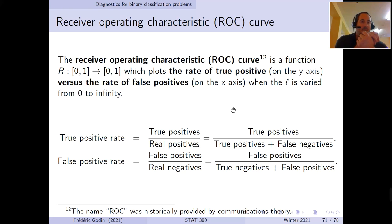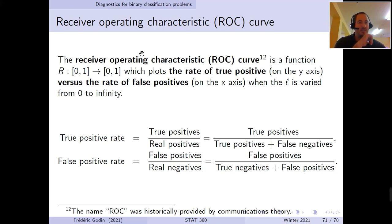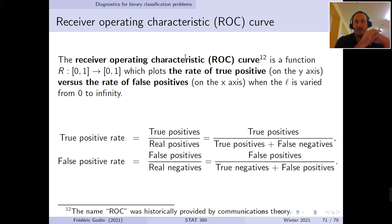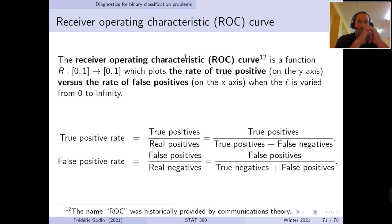Confusion matrices are fairly intuitive, so we won't spend much more time on them. Now we discuss the receiver operating characteristic curves — ROC curves. The name comes historically from communications theory, where it makes sense, but outside that context the name is a bit unusual. We'll simply call it the ROC curve.